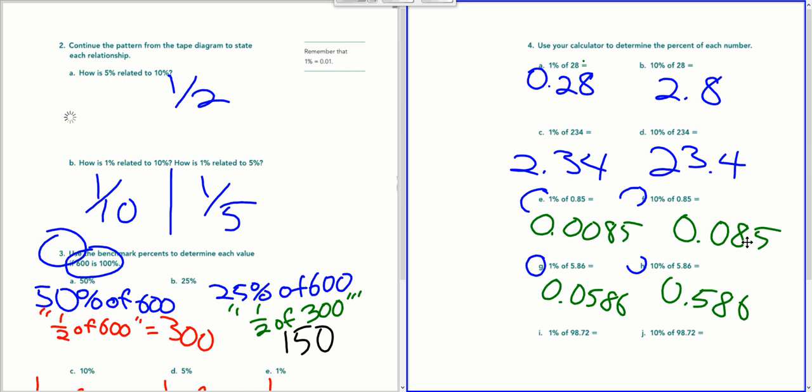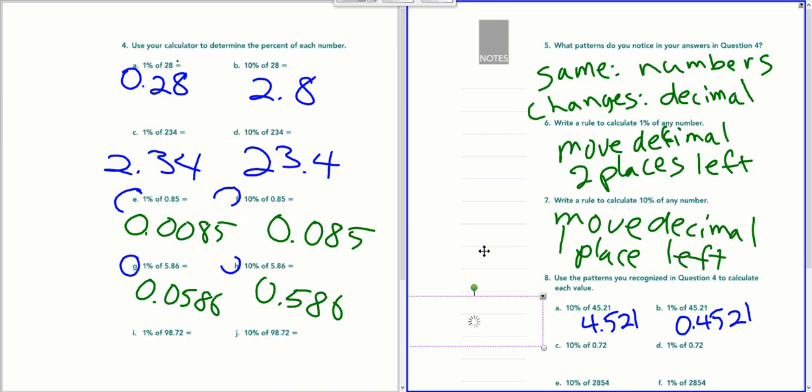Then we went a little bit further. What if I use a calculator, and I found 1% of 28? That would be .28. What about 10%? That would be 2.8. And then 234, 1% of that is 2.34, 10% of it is 23.4. And you start to see a pattern forming here. What we found is the numbers are staying the same, but the decimals are changing.